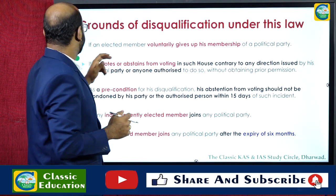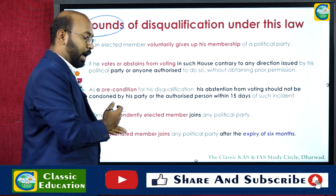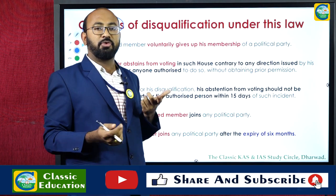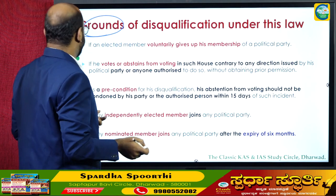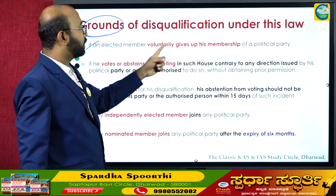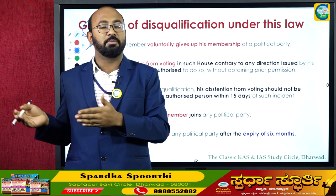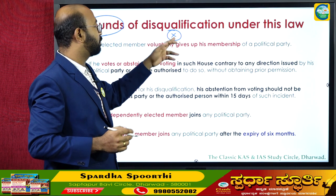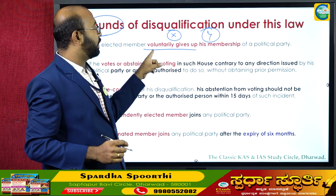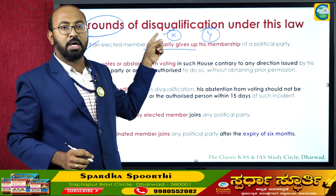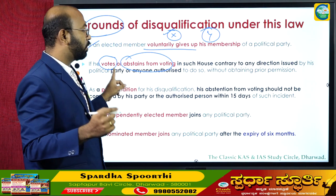Now, what are the grounds for disqualification? The 52nd Amendment Act or the 10th Schedule provides certain conditions under which an elected member can be disqualified from membership in Parliament or a state legislative assembly. The first ground: if an elected member voluntarily gives up his membership of a political party, he will be automatically disqualified. For example, if a person elected on Party X's ticket voluntarily gives up that membership and joins Party Y, he stands disqualified.